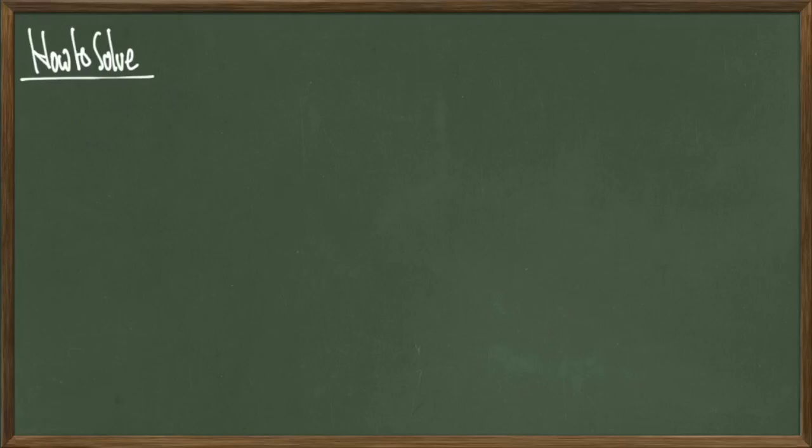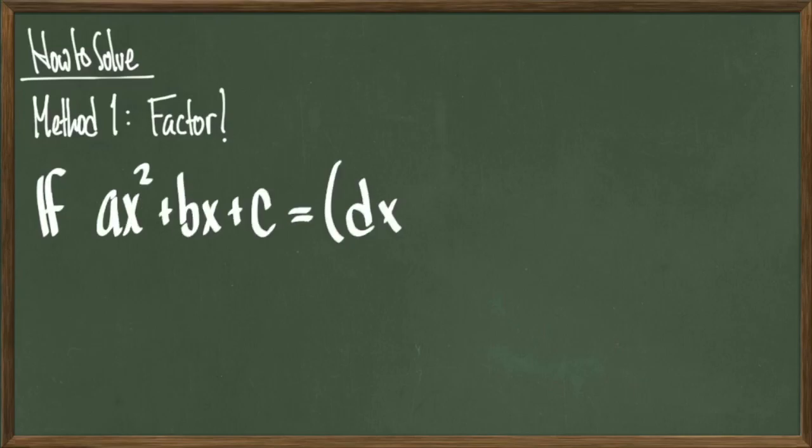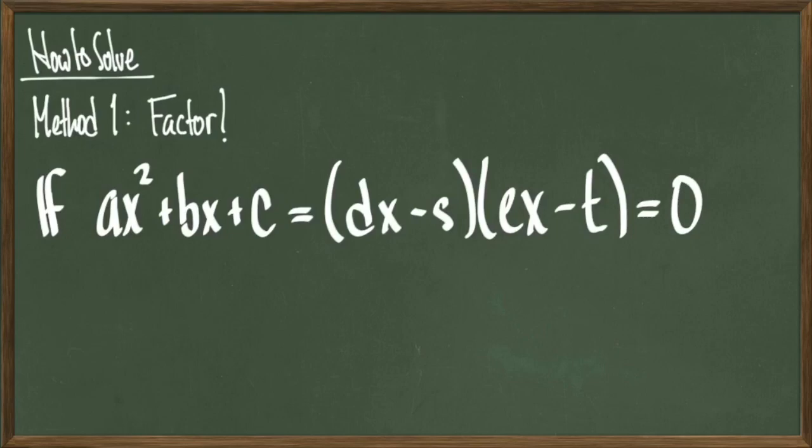We go over two main methods. The first thing we can try doing is factoring the polynomial. If we can get the polynomial written in factored form, it will reveal our roots in a nice way. In the case that our quadratic ax squared plus bx plus c equals the factored form dx minus s times ex minus t, where d, e, s, and t are just some real numbers that satisfy this equation, then we can find our roots in an easy way.